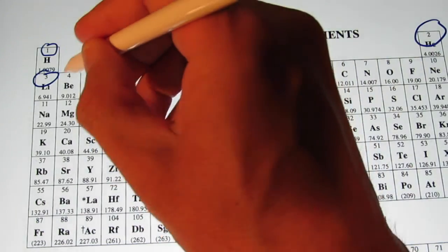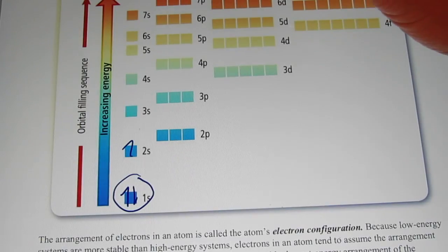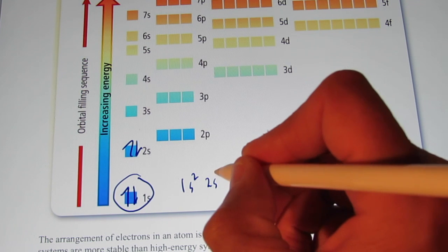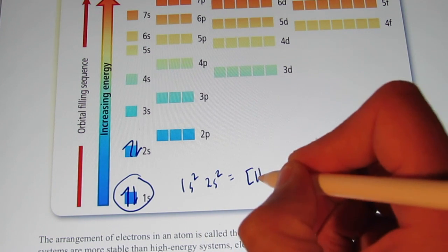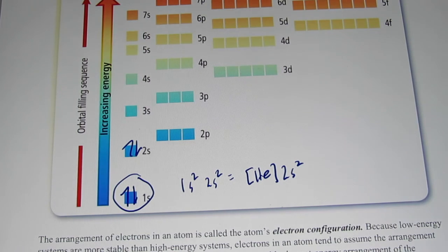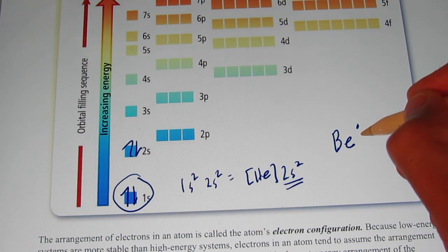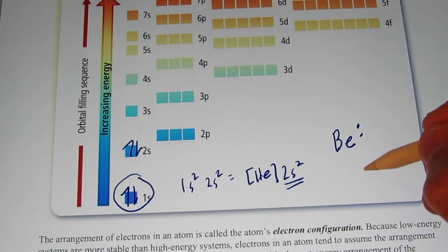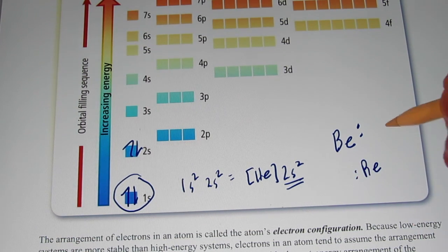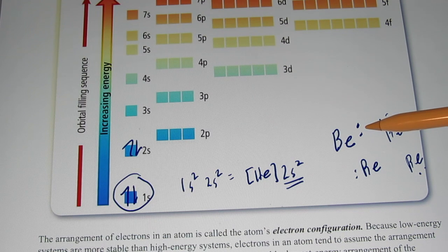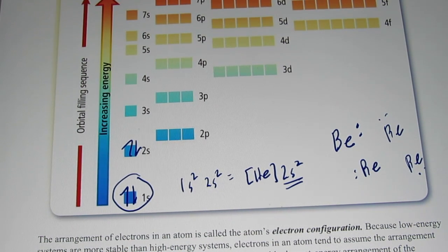The next element is beryllium with four electrons. We put that fourth electron in, giving us 1s2 2s2 — the same as [He] 2s2. It has two valence electrons, which are paired. So we write Be with a pair of dots. I could put that pair to the right, left, top, or bottom — it doesn't make a difference. I like to start on the right-hand side, but technically you can put that pair wherever you want.